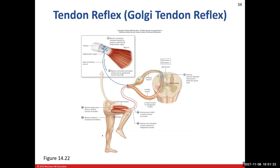In this scenario, the quadriceps muscles are contracting too much. The Golgi tendon organ, located where the muscle and tendon meet, is monitoring the tension. That sensory information is relayed to the spinal cord, where the sensory neuron stimulates an interneuron, which inhibits the alpha motor neuron going to the quadriceps femoris group, shutting it off. That's the first half — we've shut off the muscle from contracting too much.